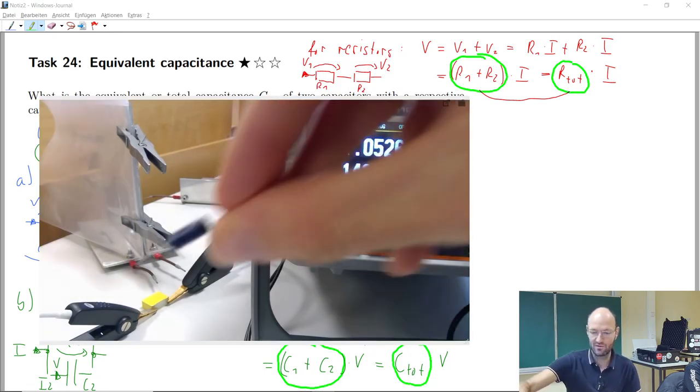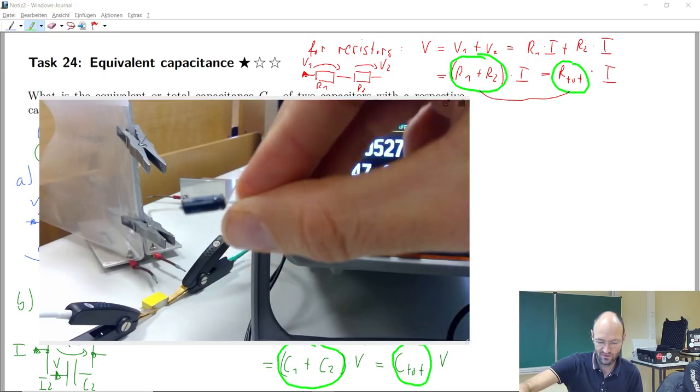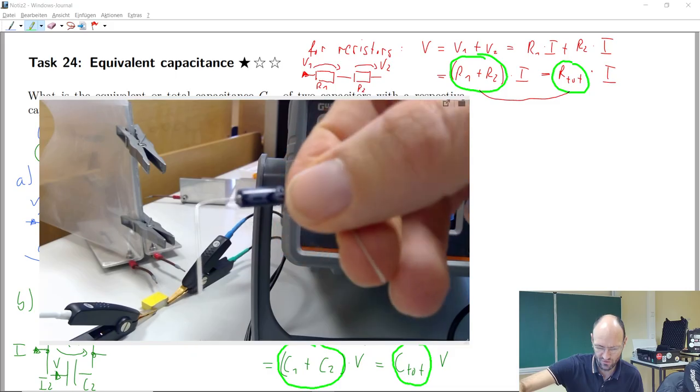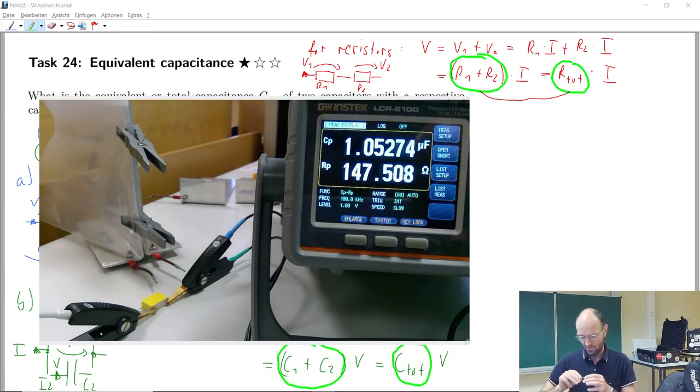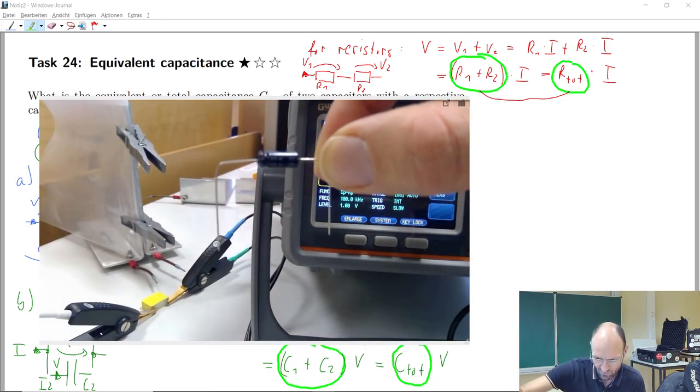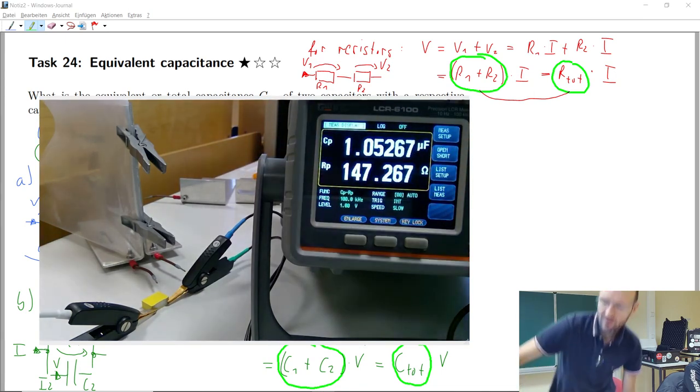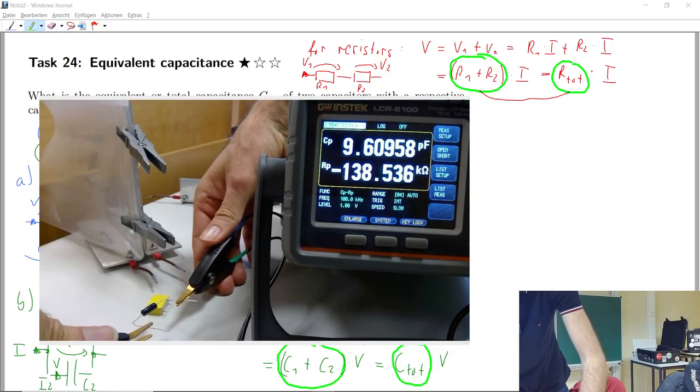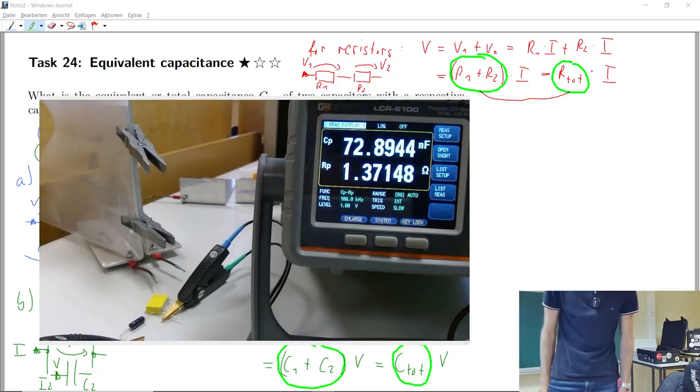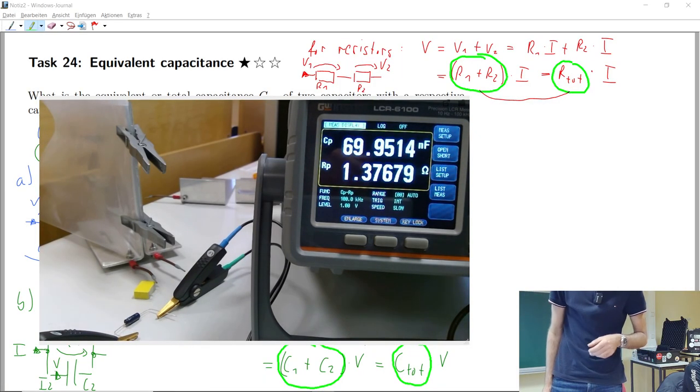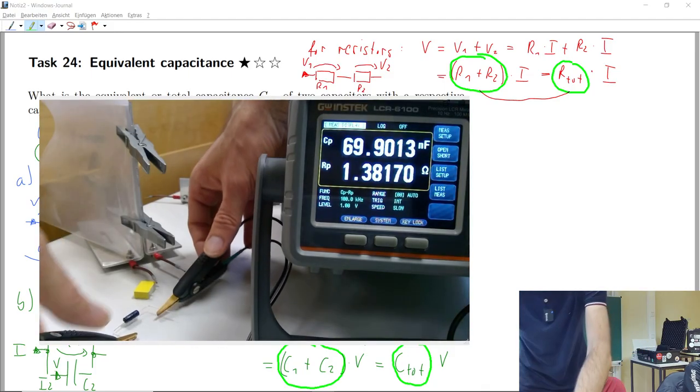Then we have this electrolytic capacitor that I've shown before. Camera unfortunately does not really focus. But this one has 22 microfarads. Let me see if I can try to get this into focus, but not really. So 22 microfarads, let's see if it works.